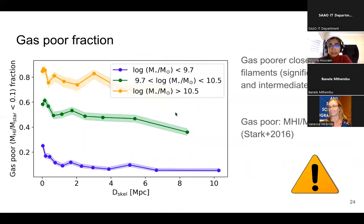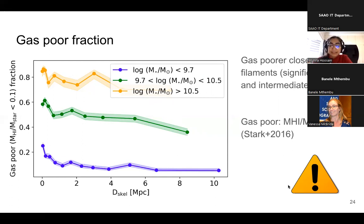Then I looked at the gas fraction for galaxies since we had H1 measurements. A word of caution: I've received a message from one of my collaborators saying some of the H1 measurements I've been using are slightly outdated, so these results might change slightly, though I don't expect any major changes once I update them. What I found is that galaxies are gas-poorer close to filaments, and this was statistically significant for the low and intermediate mass bins.